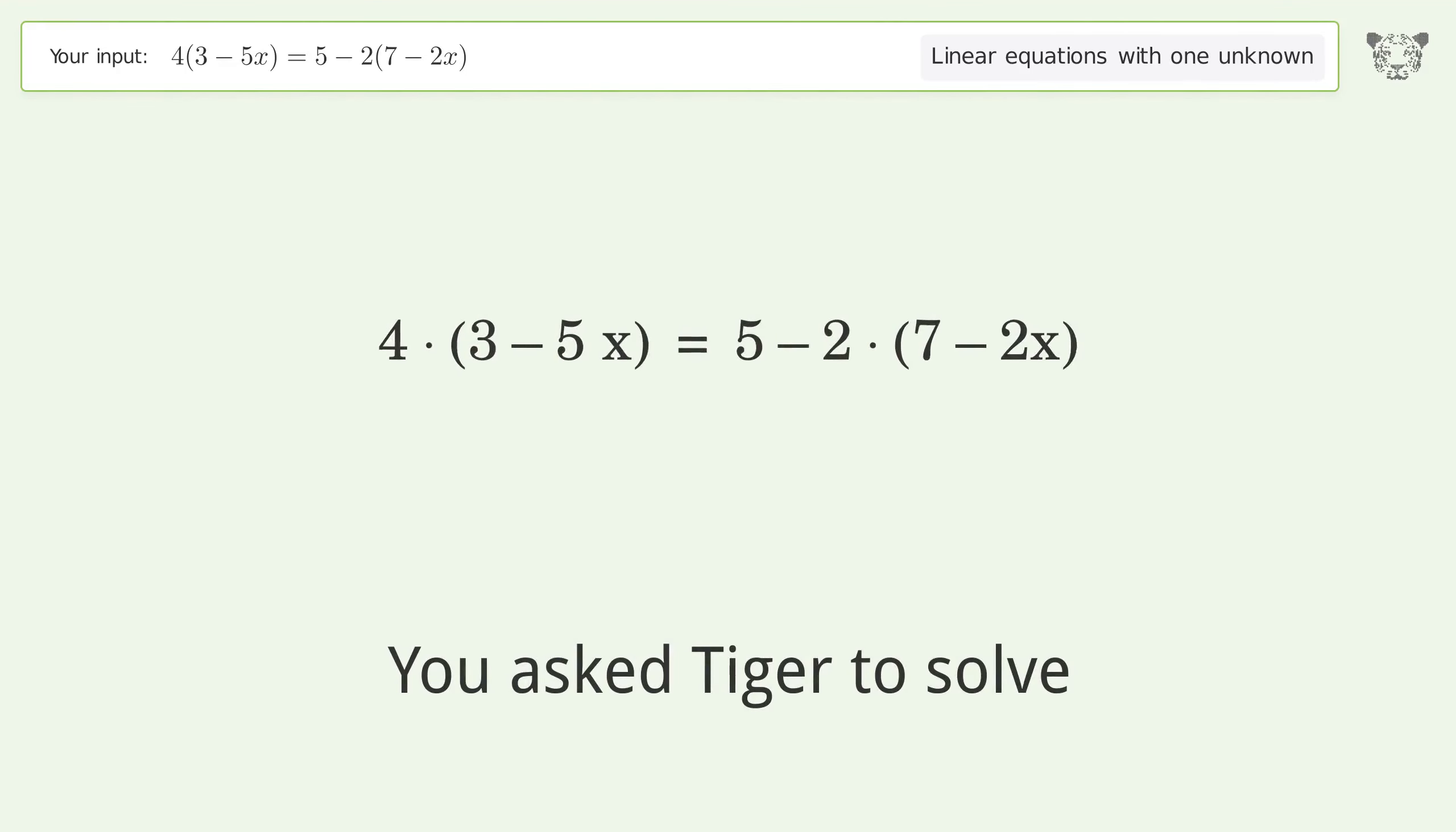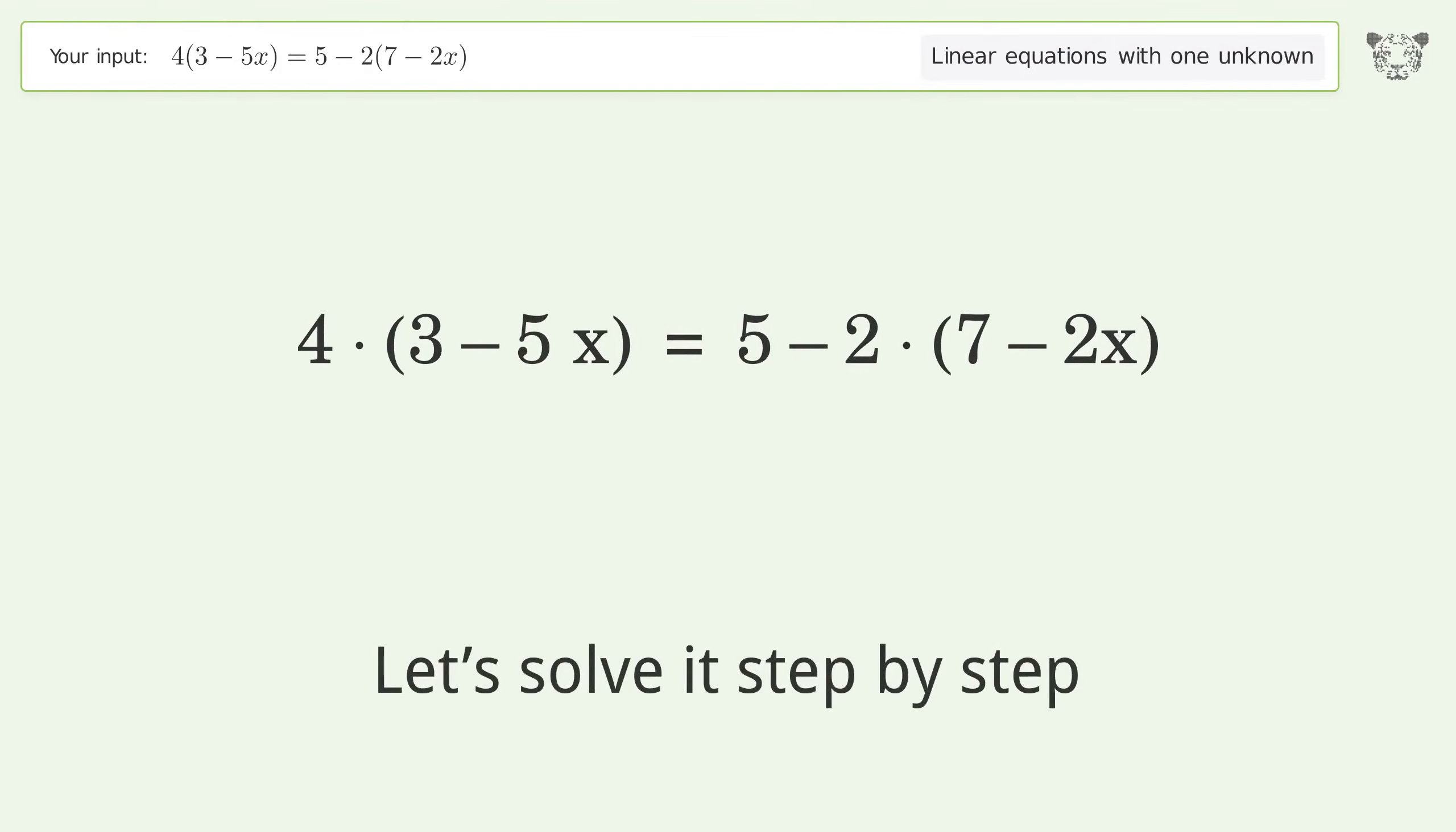You ask Tiger to solve this linear equation with one unknown. The final result is x equals seven-eighths. Let's solve it step by step: simplify the expression and expand the parentheses.